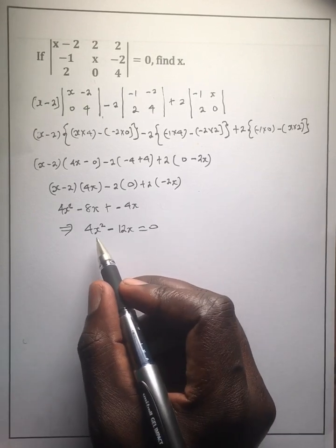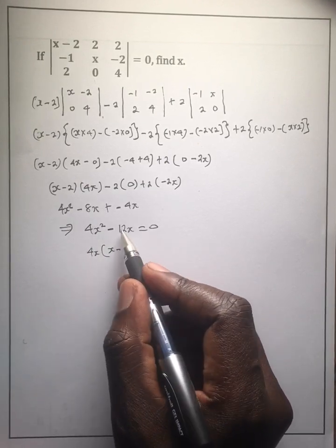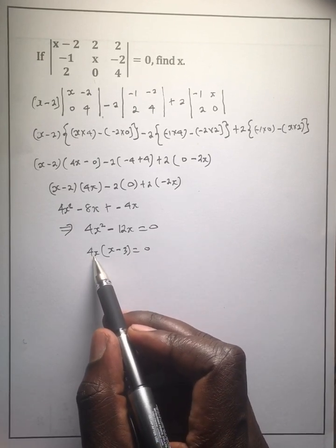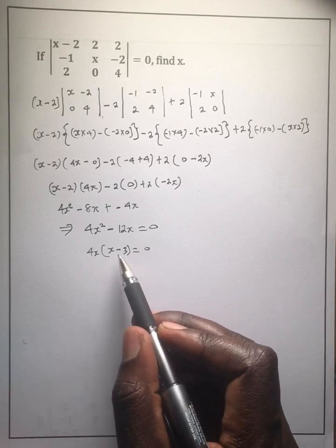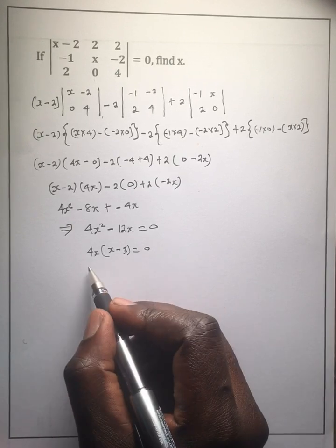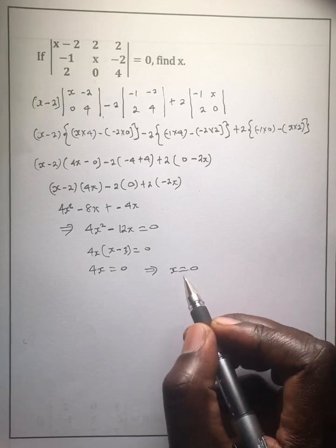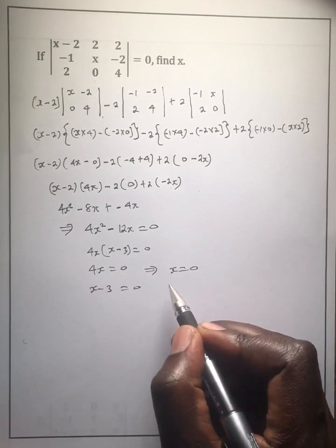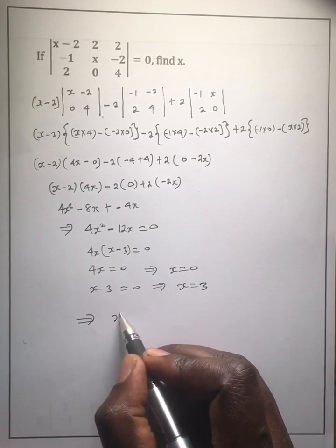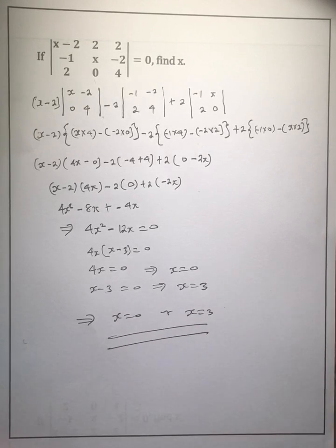We can use factorization where the common factor is 4x, giving us 4x times x minus 3 equals 0. For the product to be 0, either 4x equals 0 or x minus 3 equals 0. So if 4x equals 0, then x equals 0. And if x minus 3 equals 0, then x equals 3. Therefore x is equal to 0 or x is equal to 3.